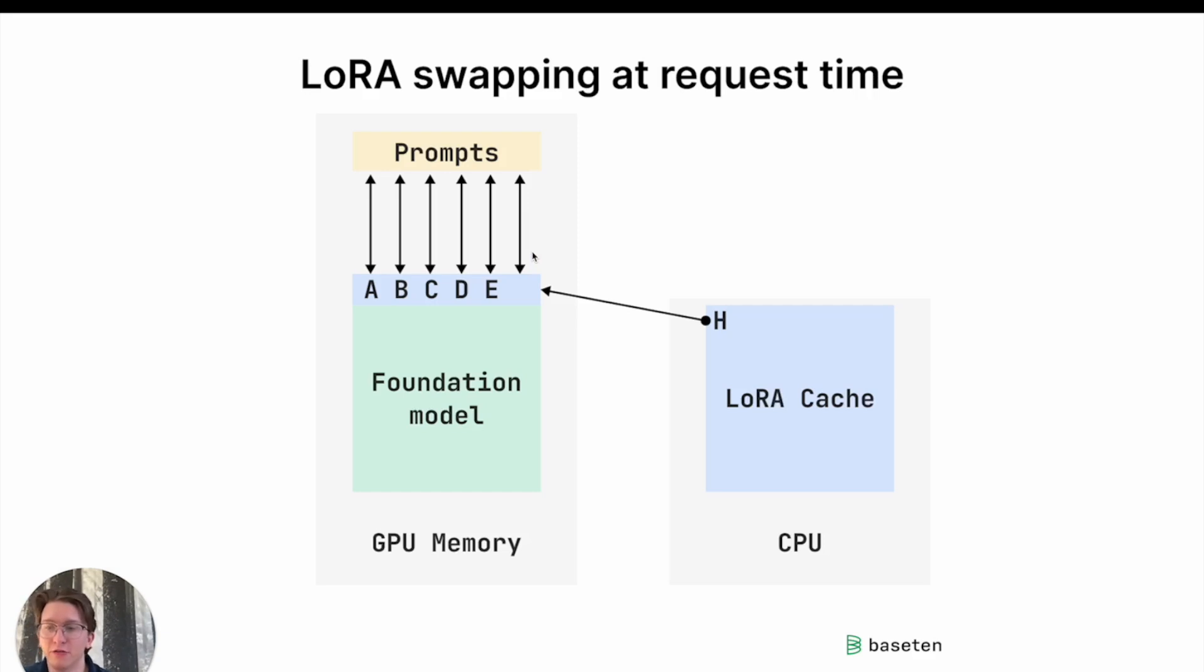And we're able to as requests come in from the user, we're able to grab the appropriate LoRa, put it in, fill the request. And actually, thanks to in-flight batching in TensorRT LLM, we can do this on the fly. So basically, each request is coming in, and every request to the model can be using a different LoRa at the same time. So it works well, you can basically serve as many different LoRa's as you're receiving requests for, and swap them out seamlessly.